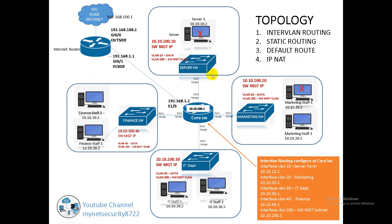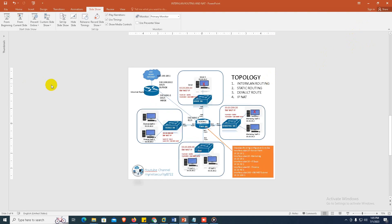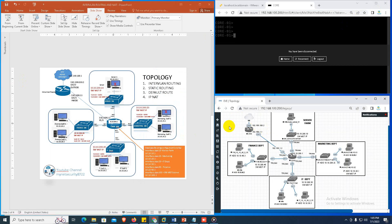We have a core switch, and all the switches are connected to the core switch by a trunk. The interface VLANs will be configured on the core switch for the data VLAN and switch management VLAN. A subnet will be assigned for the data VLAN. On the internet router we will configure IP NAT to give the hosts access to the internet. I will be using EVE-NG to simulate the configuration.